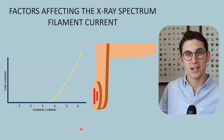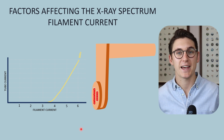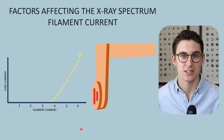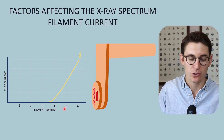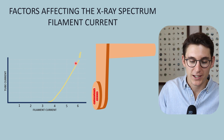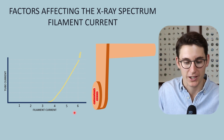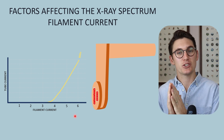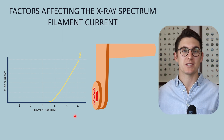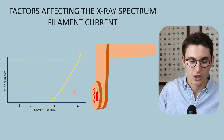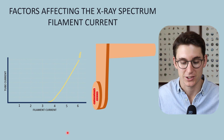Our tube current is the number of electrons flowing across our x-ray tube, and that is proportional to the number of x-rays we produce. So it logically makes sense that as we increase our filament current, we increase our x-ray number — the quantity of our x-ray beam. We are doing nothing to the energy of those x-rays; that is our tube potential that changes the energies. So our quantity increase is proportional to our filament current increase.